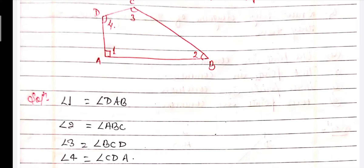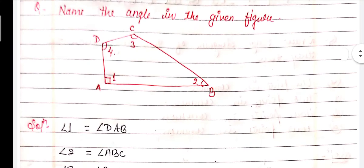Now let us see Angle 2. Angle 2 is formed by two rays — the first ray is BA and the second ray is BC. So BA and BC are the two arms and B is the vertex. We write B between A and C, and we get the name of Angle 2 is equal to Angle ABC.